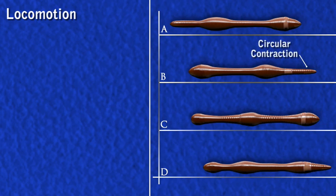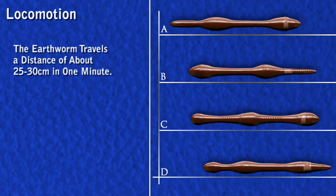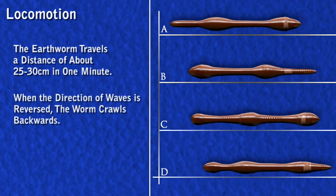It has been calculated that by this method the earthworm travels a distance of about 25 cm to 30 cm in a minute. When the direction of waves is reversed, the worm crawls backwards.